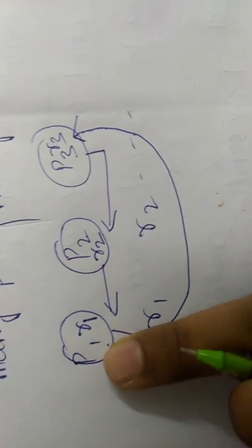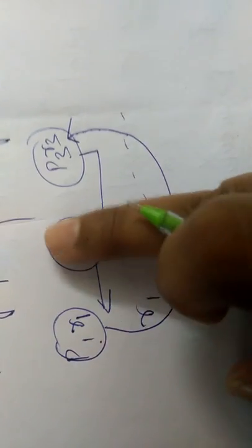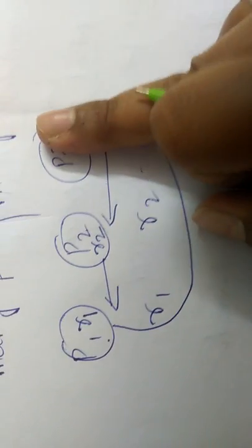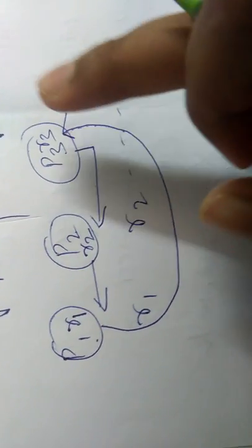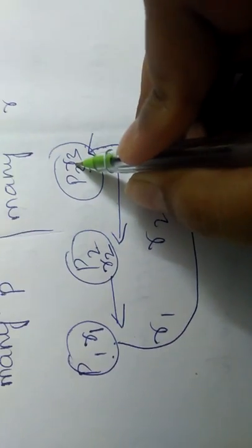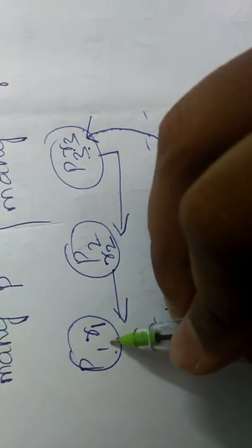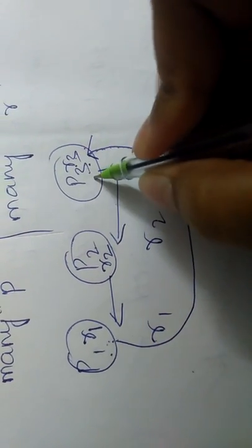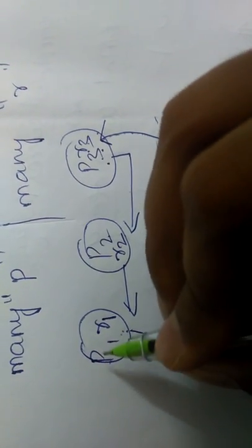Process three is requesting for resource two, process two is requesting for resource one, and process one is requesting for resource three. But resource three cannot be allocated to process one because resource three is already with process three. So process one went to the waiting state.